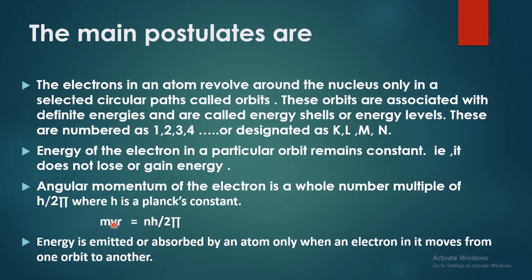MVR is equal to a whole number multiple of h by 2π. MVR equals nh/2π, where h is Planck's constant and n is a whole number.